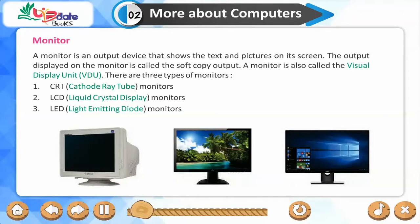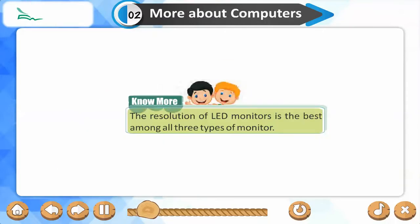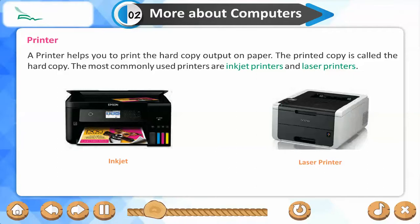There are three types of monitors: CRT (cathode ray tube), LCD (liquid crystal display), and LED (light emitting diode). The resolution of LED monitors is the best among all three types. A printer helps you to print hard copy output on paper. The most commonly used printers are inkjet printers and laser printers.